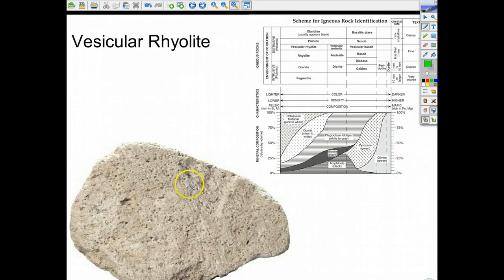Here you can see vesicular rhyolite. Notice that, where are we? Hey, here we are. Vesicular rhyolite. In terms of color, it tends to be on the lighter side, which it is. You can see the little air pockets or gas pockets, which would make it vesicular.